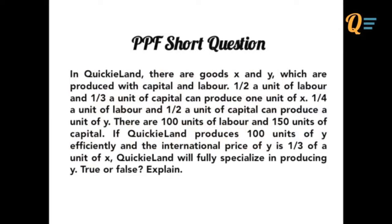Half unit of labour and one-third a unit of capital can produce one unit of X. A quarter unit of labour and a half unit of capital can produce a unit of Y. There are 100 units of labour and 150 units of capital.